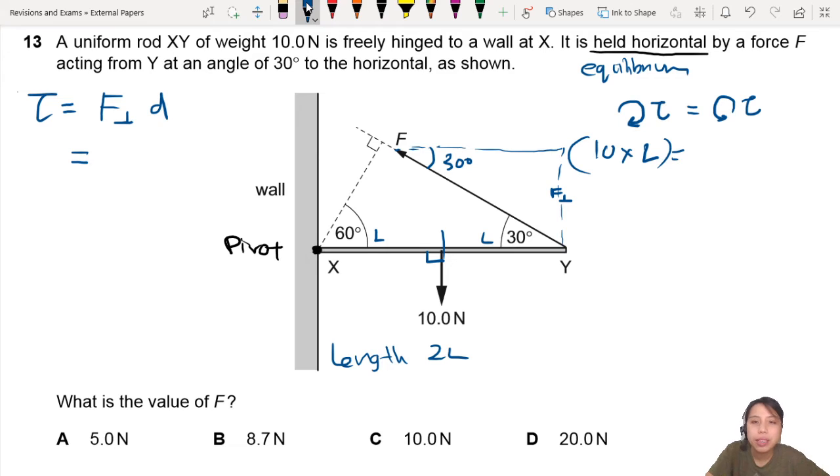...which is this one. And that would be opposite, hypotenuse, sine. So this would be F sine 30 times... what's the length? 2L. That's one way to do it.